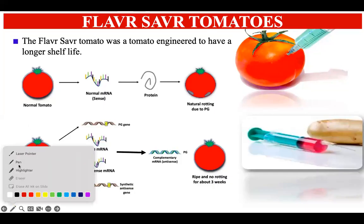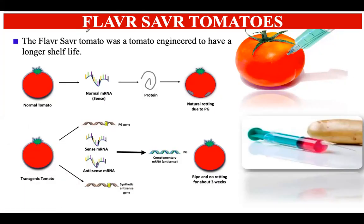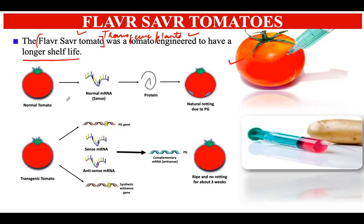In this lecture we are going to discuss the mechanism and principle of Flavr Savr tomatoes, which is one of the important examples of transgenic plants. Transgenic plants are plants into which some external gene has been integrated in order to produce a desirable trait. Flavr Savr tomatoes were engineered to have a longer shelf life and to delay the ripening process of the tomato crop.